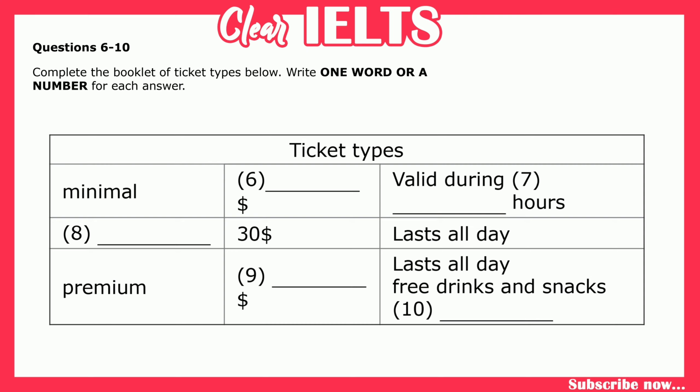I want to see as much of Sydney as possible. Do you have full-day tickets? Yes, sure. The next ticket type we have is standard. It's the most popular type. This pass costs $30 and lasts all day.